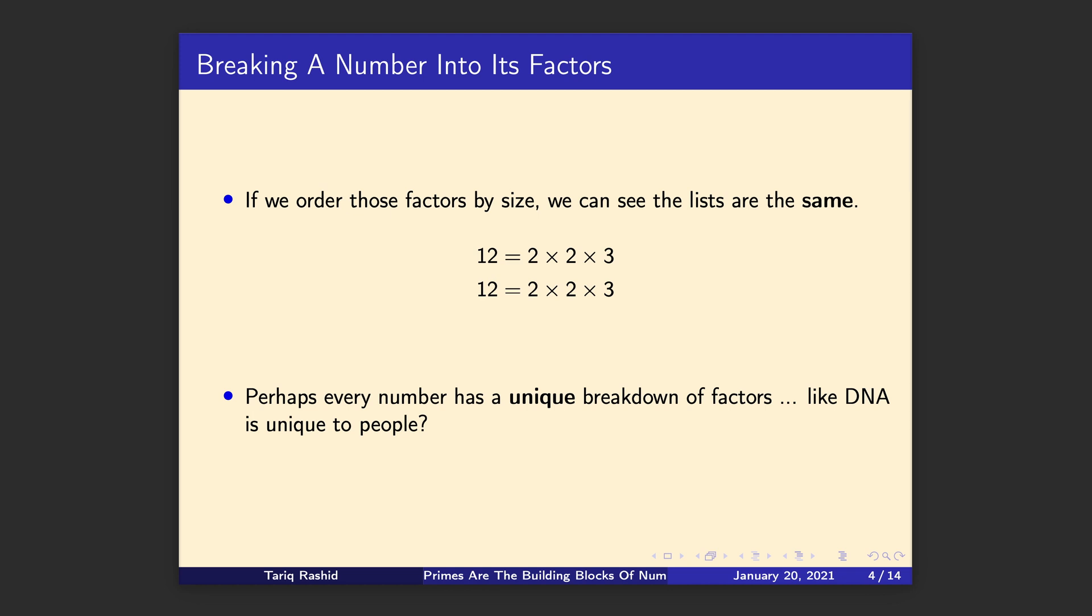And it would be really, really useful, really handy if that was true. And actually that is what the fundamental theorem of arithmetic, as grand as it sounds, that's what it says. It simply says that every whole number, bigger than one, can be broken down into prime factors. And part 2, that that list of prime factors is unique to that number. It's almost like its identifying code, its DNA, its barcode in a way.